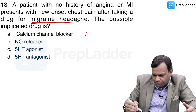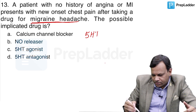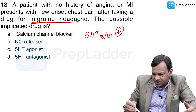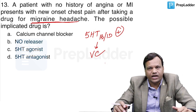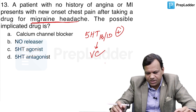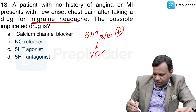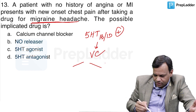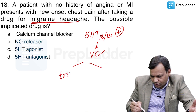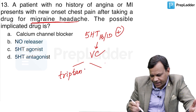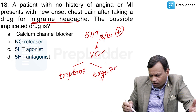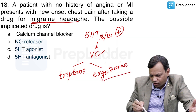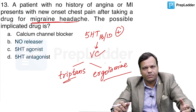This is basically caused by 5-HT-1B-1D agonists. Remember, these drugs cause vasoconstriction and they can cause spasm in the coronary artery also, which can cause chest pain. Which drugs are 5-HT-1B-1D agonists? These are either triptans like sumatriptan, or ergot alkaloids like ergotamine or dihydroergotamine. All of these drugs can cause coronary vasospasm.